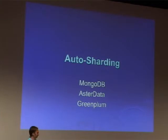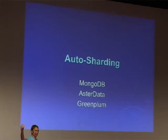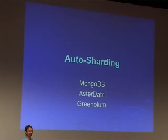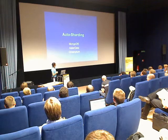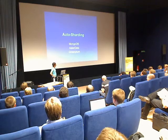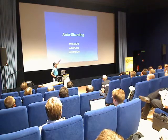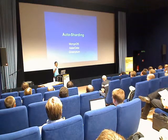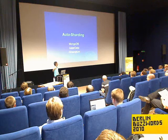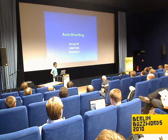One popular architecture is called auto-sharding. Basically what these systems do is take table data, chop it into horizontal shards, and then manage the shards in separate databases running on separate machines. Here are some examples of auto-sharding systems: AstorData and GreenPlum actually use Postgres as the database that manages the shards, while Mongo has implemented their own database.